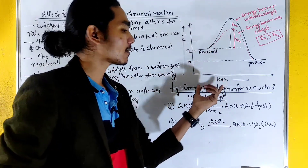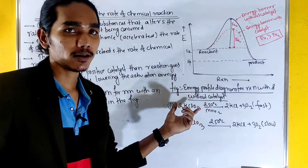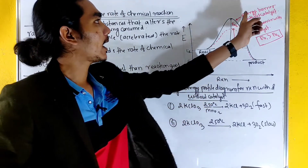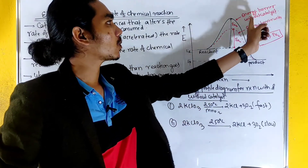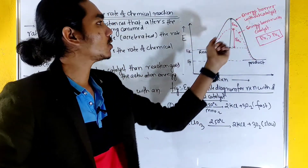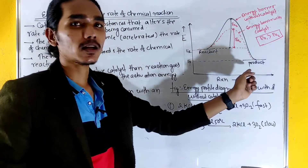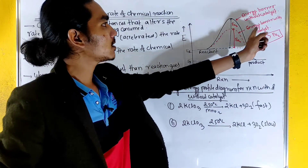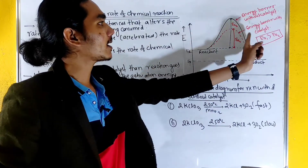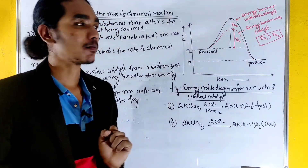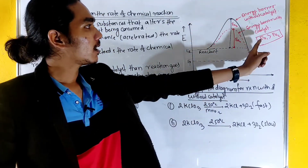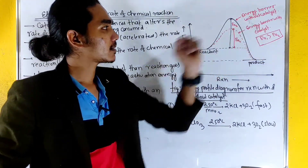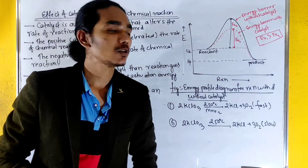The first thing we will look at in the figure is the energy barrier without catalysts, and the energy barrier with catalysts. Ea1 is greater than Ea2.